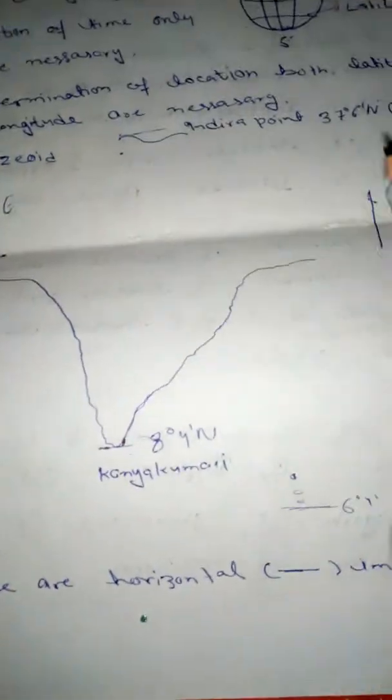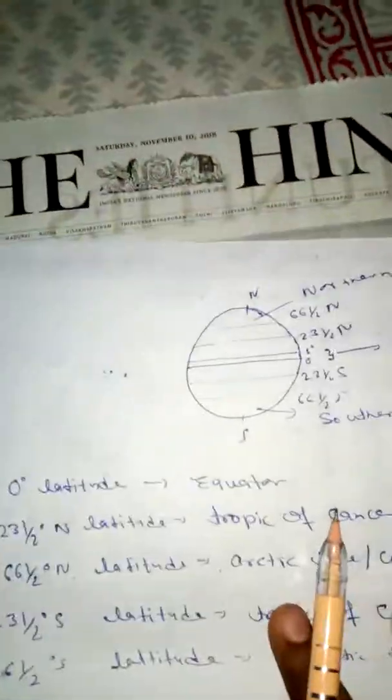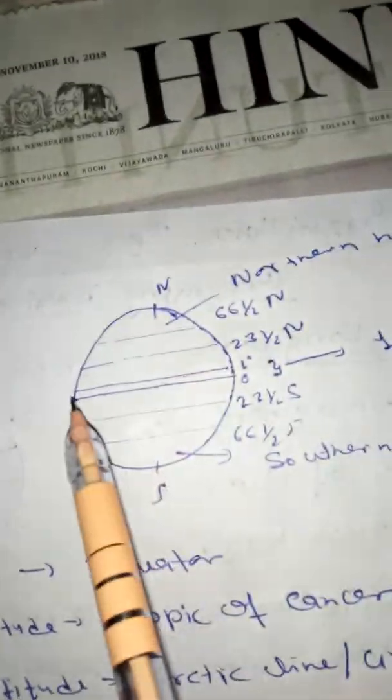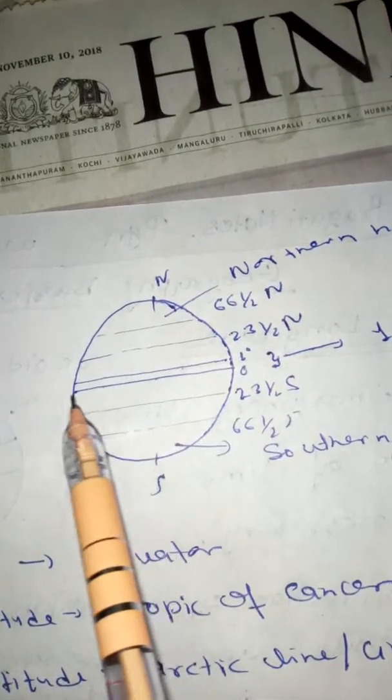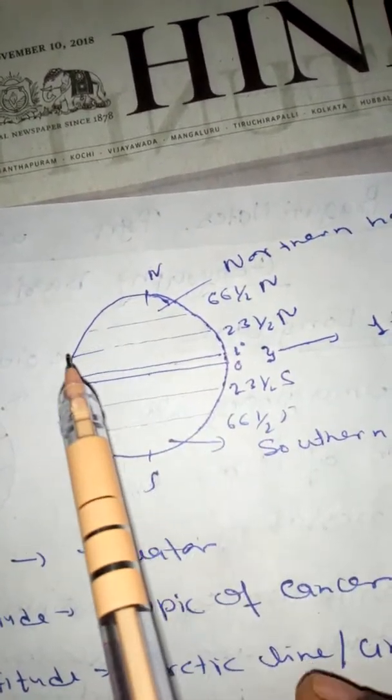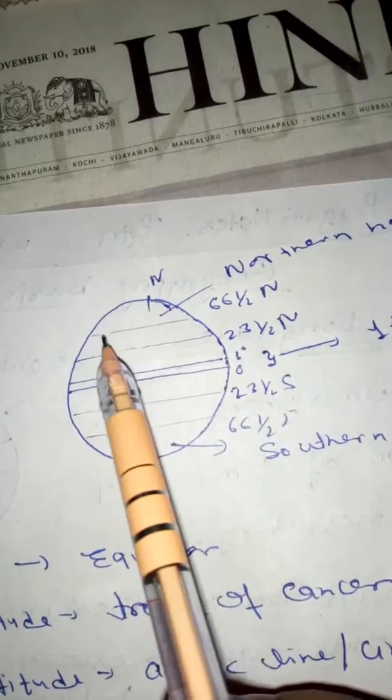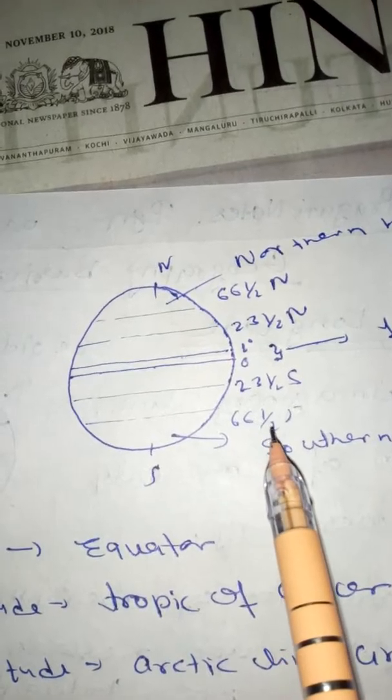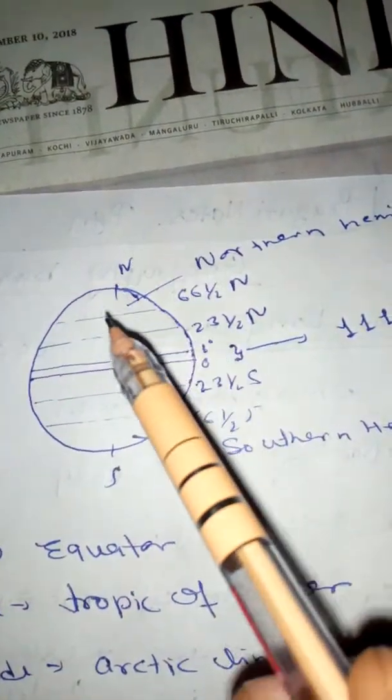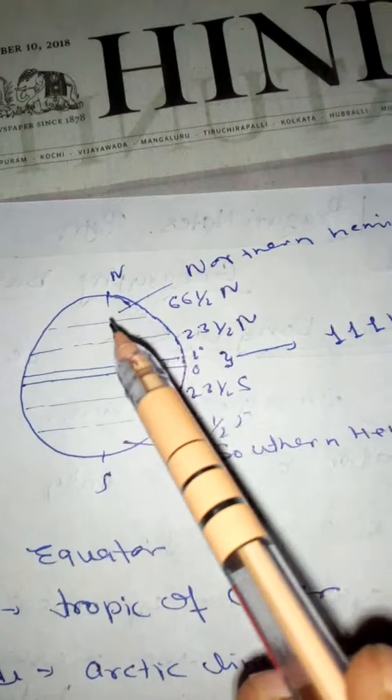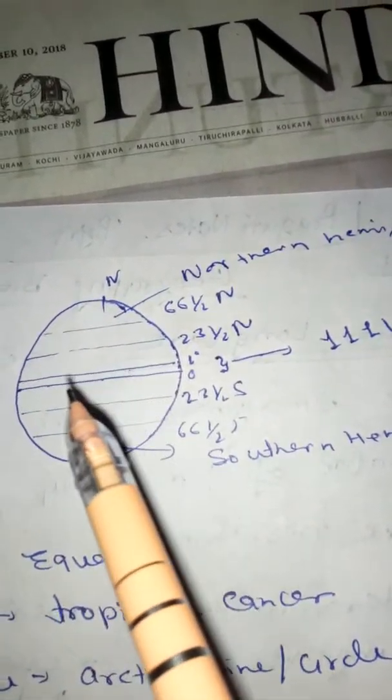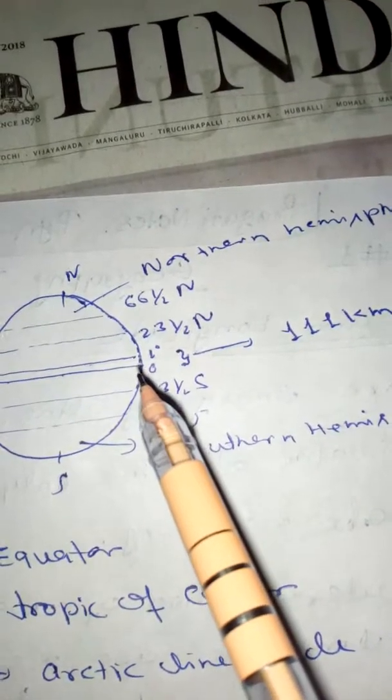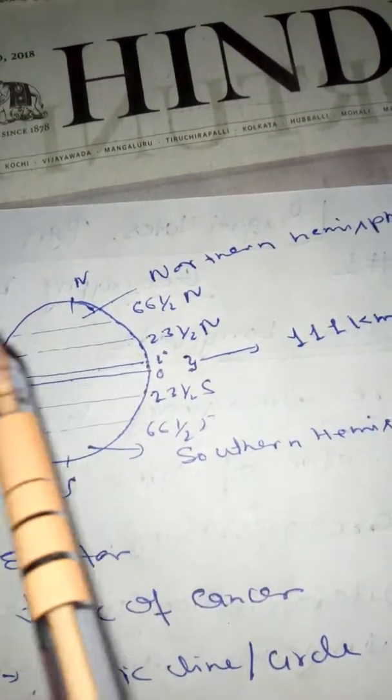We will discuss about latitude. The latitudes are the horizontal lines, means these lines are the latitude lines. This is zero degree, this is equator. This is zero degree of the earth, this is one degree, this is 23 and a half degrees north, this is 66 and a half degrees north, this is 23 and a half degrees south, this is 66 and a half degrees south. The upper part from this equator is called northern hemisphere and from this equator the lower is called southern hemisphere.